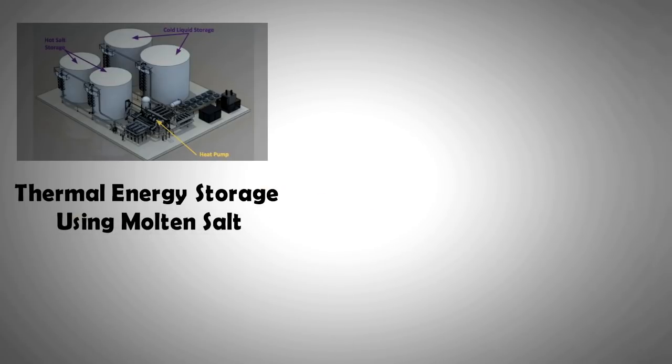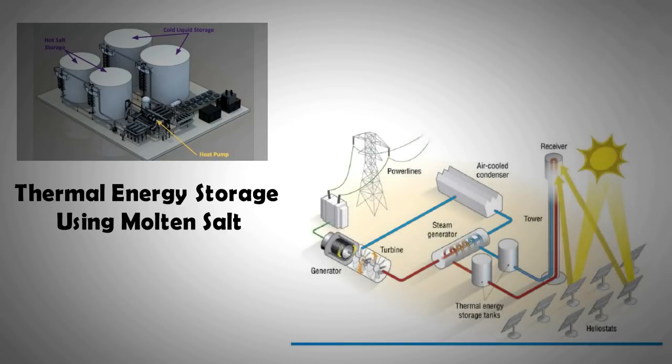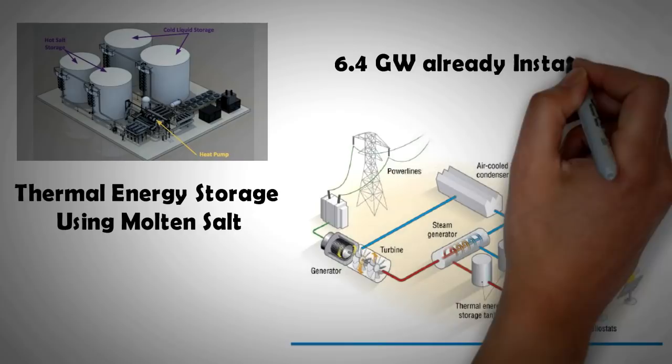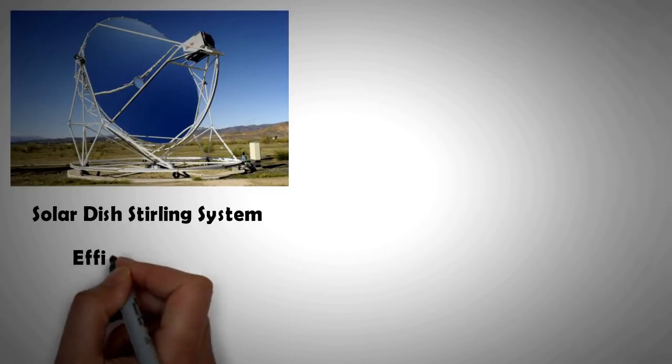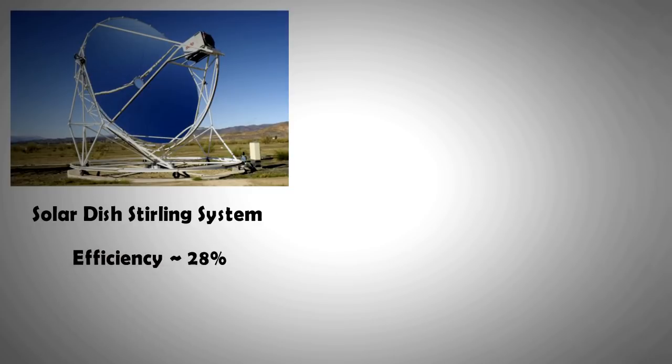The energy storage allows the solar plants to provide round-the-clock base load during sunny days. At present, there are concentrated thermal power plants with 6.4 gigawatts of nameplate capacity, 5.5 gigawatts of which were installed in the last 10 years. From 2010 to 2012, there was a lot of interest in the development of solar dish sterling engines. These reached energy conversion efficiency of over 28%. This interest has subsided since because of the emergence of low-cost PV.